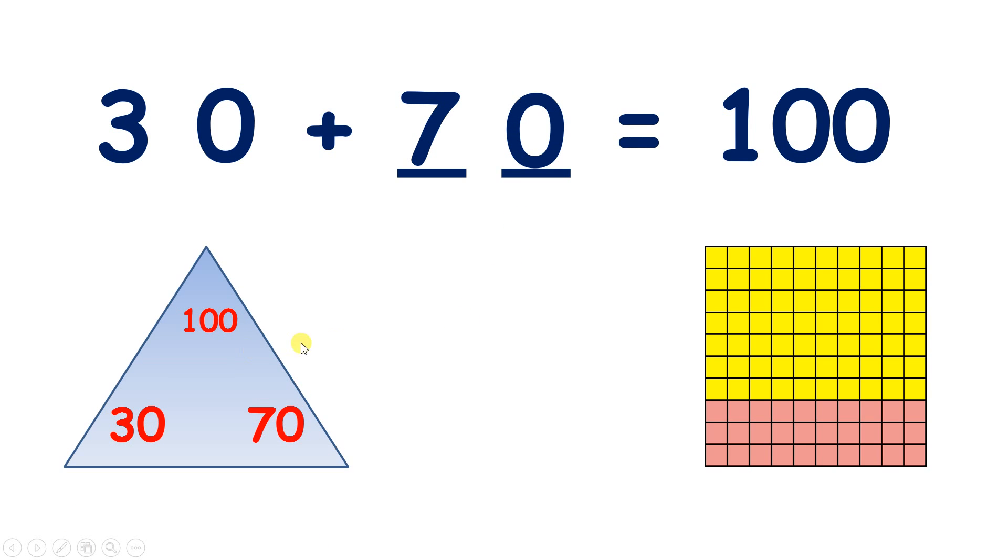So 30 and 70 are number bonds to 100. So if we know that 30 add 70 equals 100, what other three facts do we know?